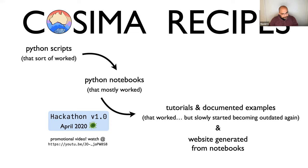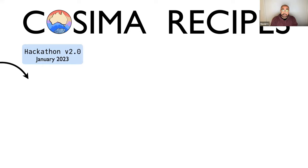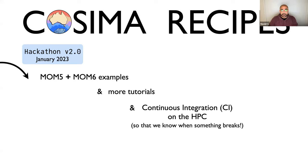Then things started becoming outdated again, and at the beginning of this year we had another hackathon. We added more examples of how to analyze model output, added examples for MOM6 — we are now using models that use MOM6 as their ocean core — and added more tutorials. Most importantly, we added continuous integration: every Sunday all notebooks are automatically submitted on the supercomputer and run to the last cell. If anything fails, someone gets an email notification so we can fix it immediately.